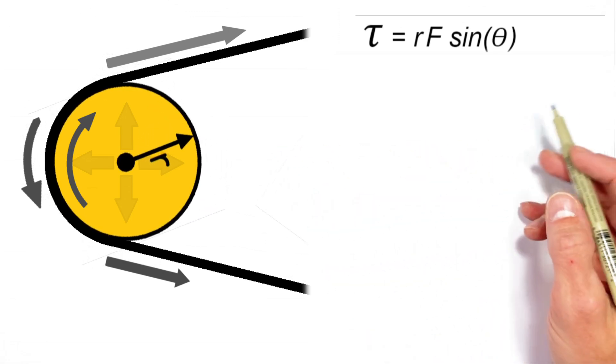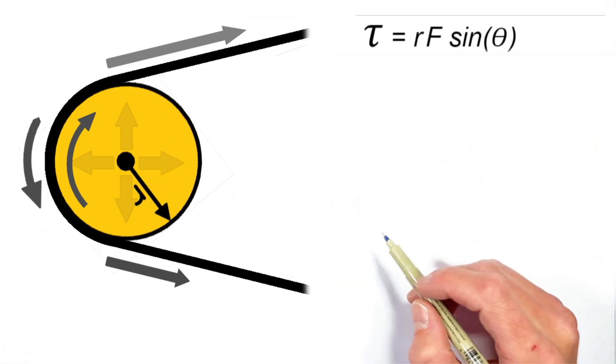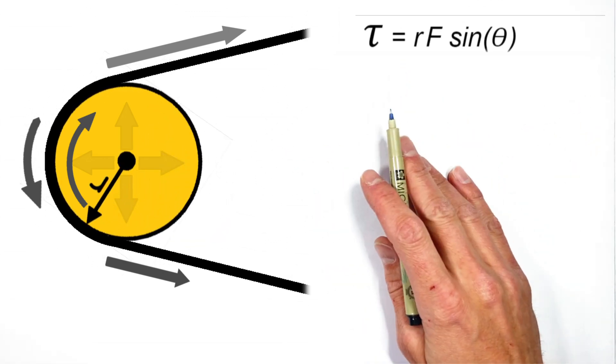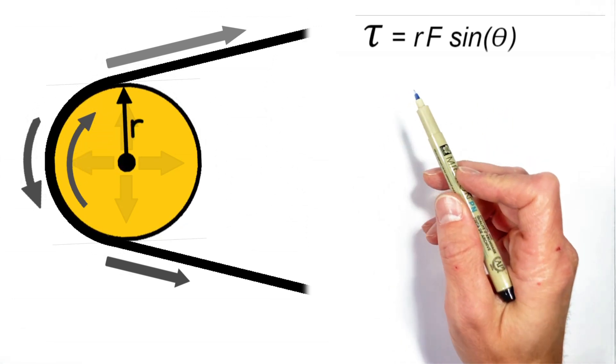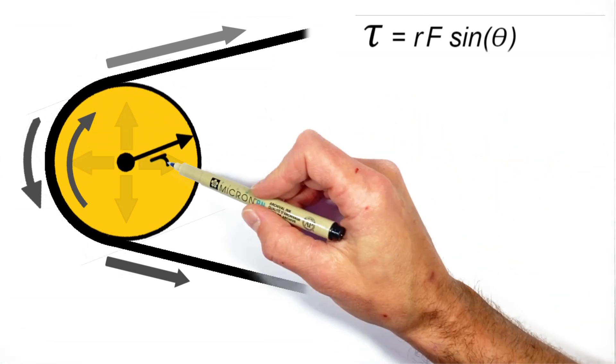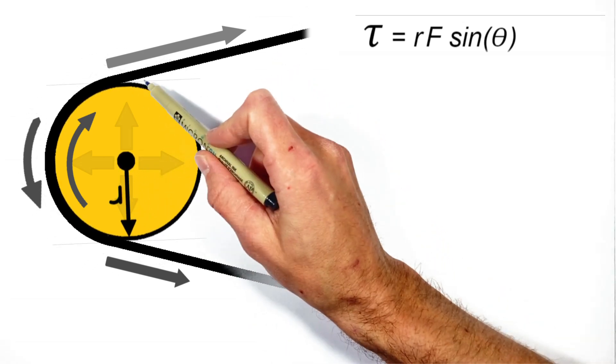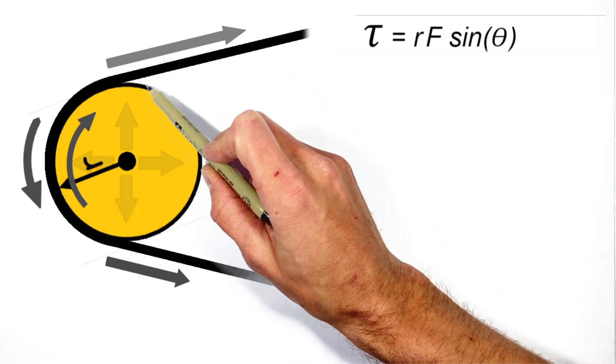You see, torque is just a twisting moment, which is given by the equation: torque is equal to rF sine theta, where r is the distance between the pivot point and the point of application of our force, and F is, in fact, a force.